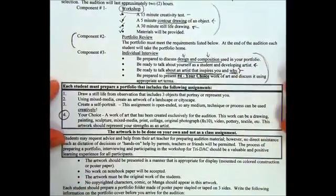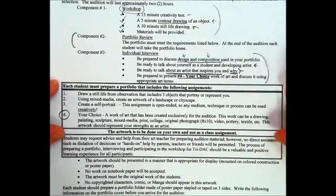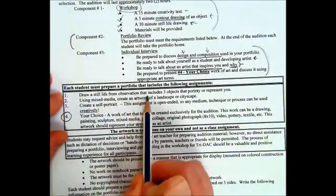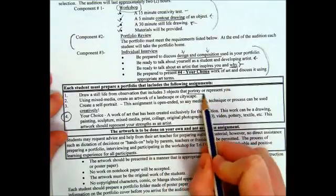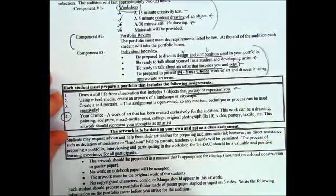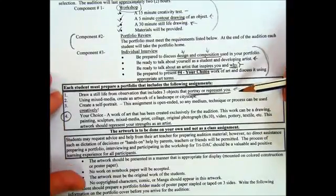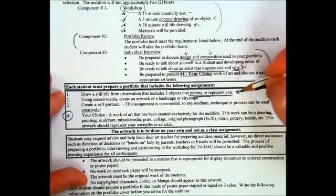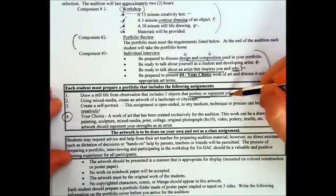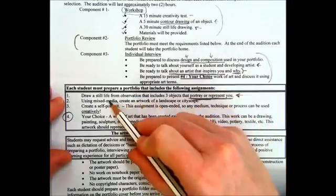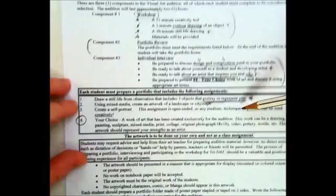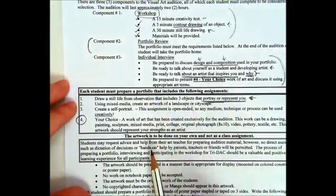Your portfolio is what's going to take the most amount of time because you have to create four artworks specifically for this audition — this can't be work you've already created. Number one: draw a still life from observation that includes three objects that portray or represent you. Things you like, things about your personality. Think of things that could symbolize you — it can be deeper than just, for example, 'I like ballet so I'll put a ballet shoe.' With the still life, you'll have already had practice drawing one, and you should be prepared for that.